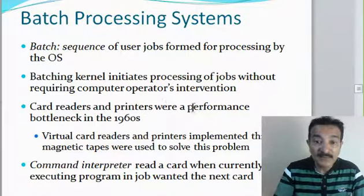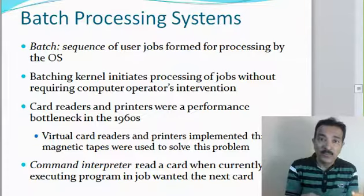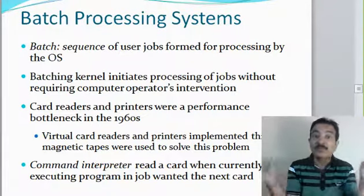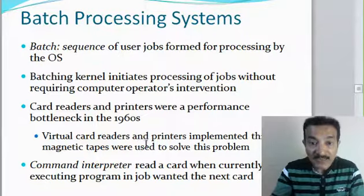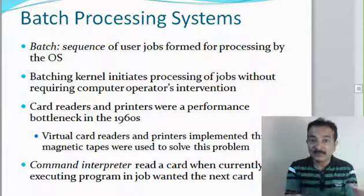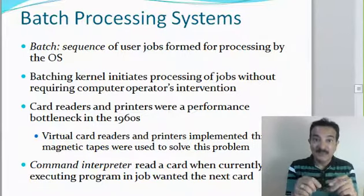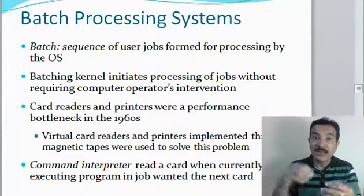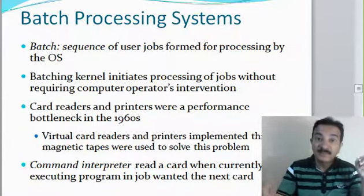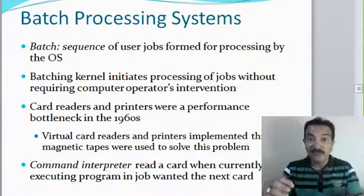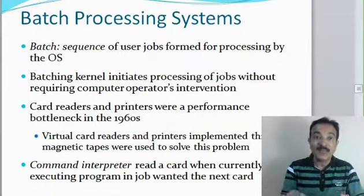The card reader and the printer were a performance problem in the 1960s, since the computer could do only one work at a time — either feed data or print. But people wanted both. So virtual card readers and printers were implemented through magnetic tapes. The paper card data is entered, the computer picks up the information and writes it to the magnetic tape. When told to print payslips, it picks data from the tape one by one, does the calculation, and prints the payslip.